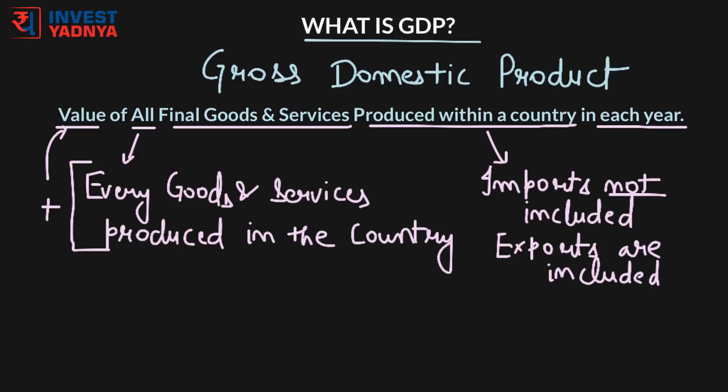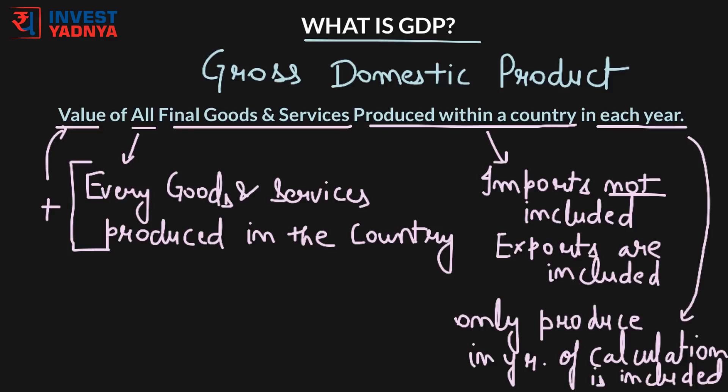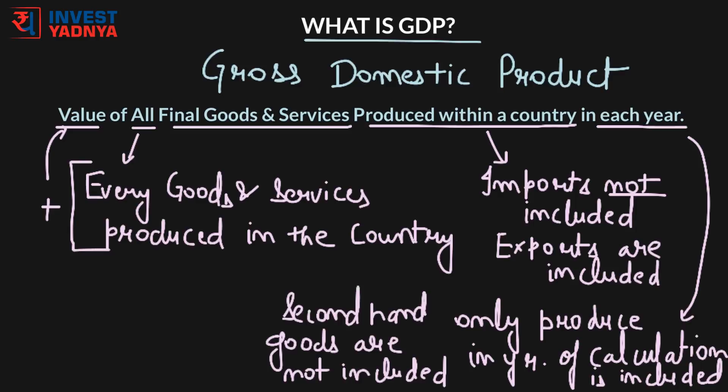GDP calculations only consider products that are produced in the year of calculation. So if a mobile is produced and sold for Rs 5,000 it would be included in the calculation of GDP, but if someone buys a second-hand mobile that would not be considered while calculating GDP.